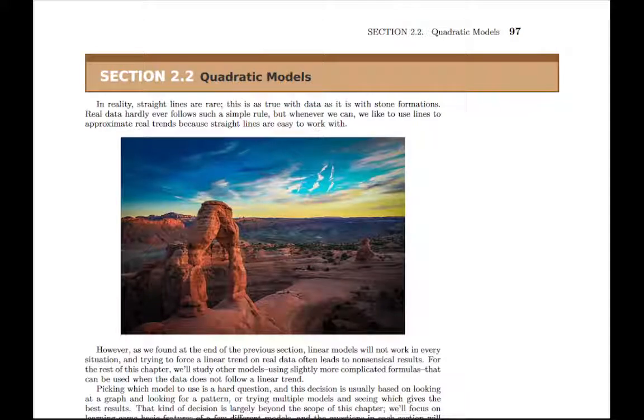In section 2.2, we start getting into other kinds of models that we can build to find trends in data. Just like we built linear models in section 2.1, in the remaining sections in this chapter we're going to talk about models that are not straight lines, but more complicated curves. And the first example of that is what's called a quadratic model.